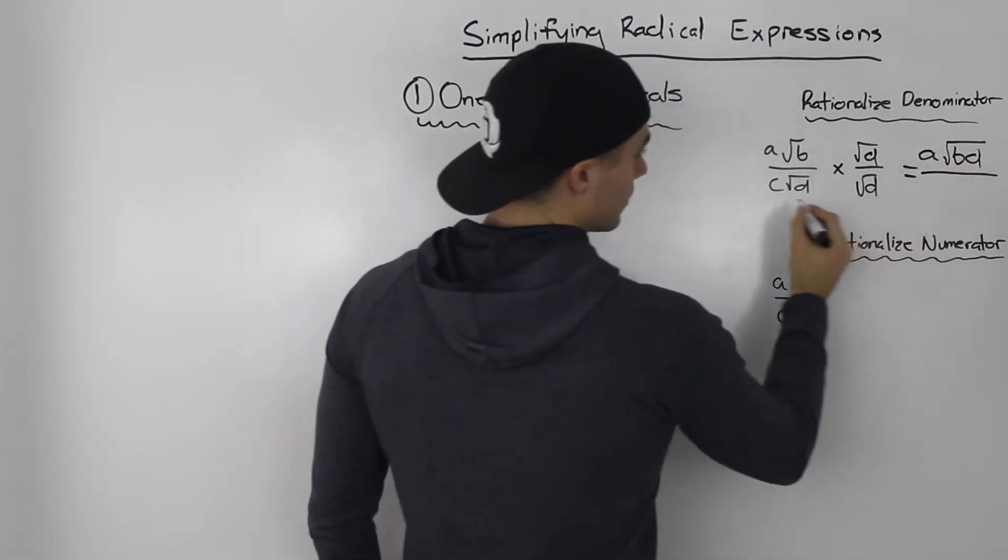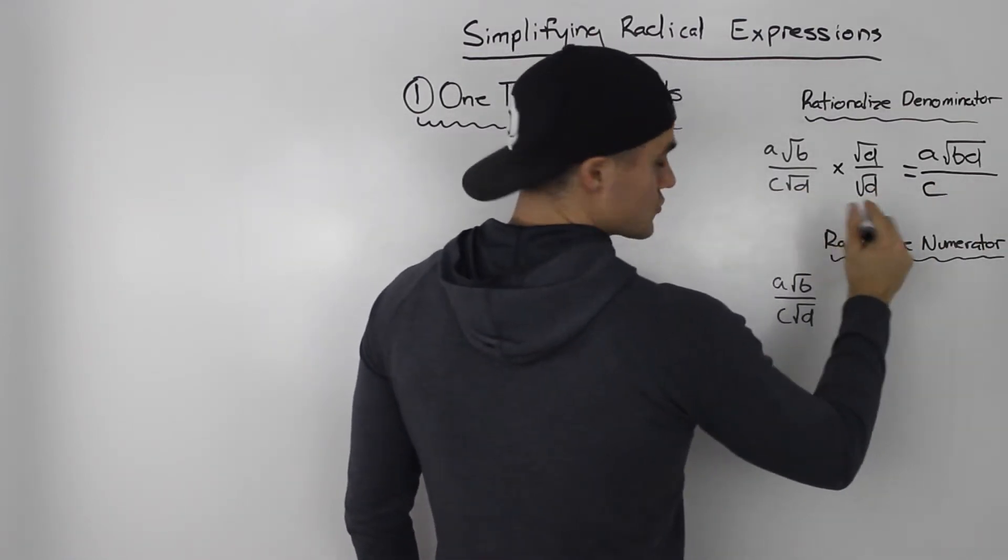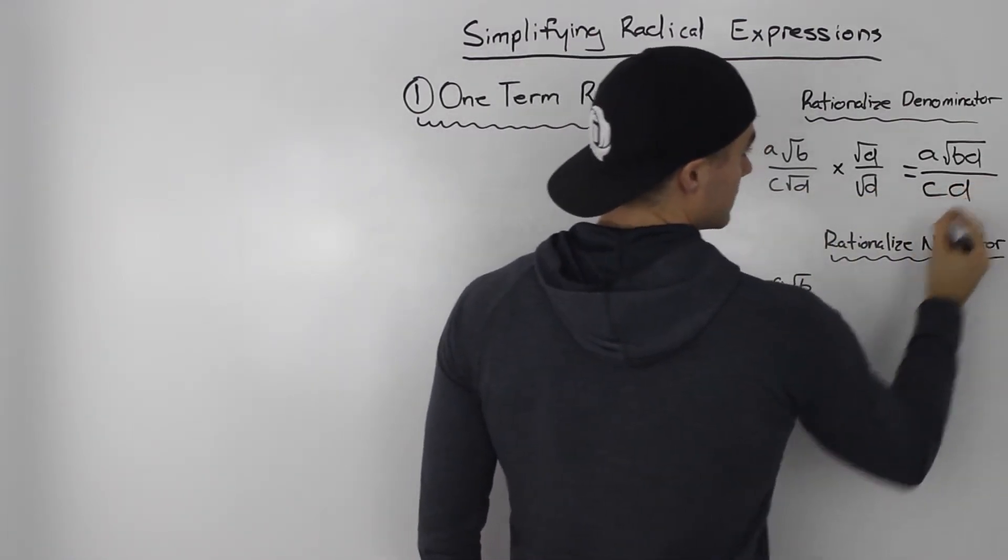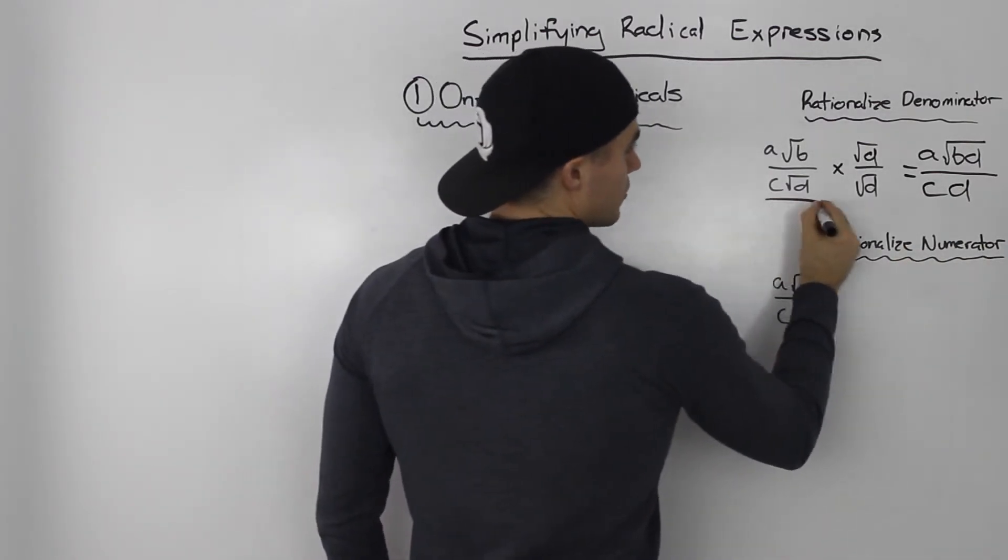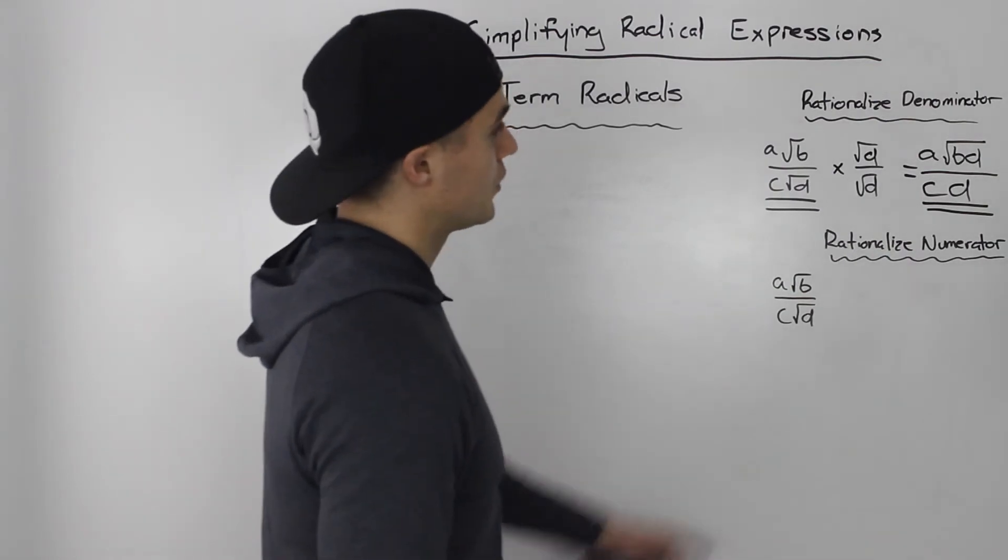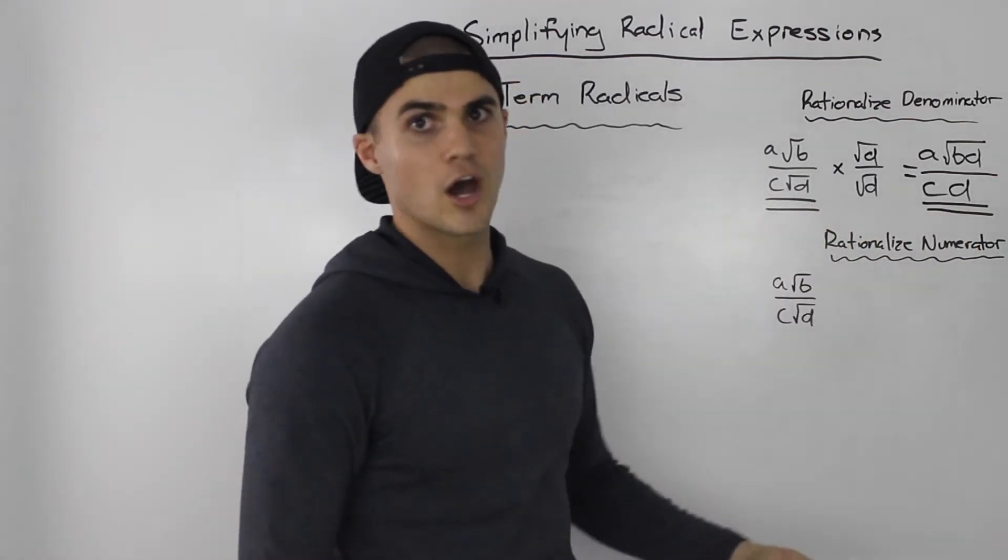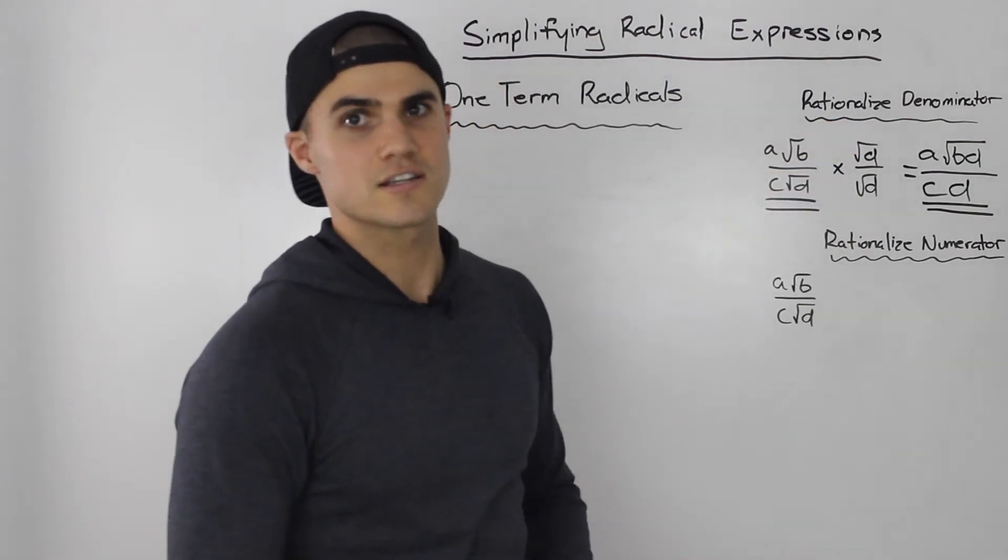In the denominator, we'll get C, and then root D times root D is just D by itself. These two expressions here are equal, but notice how this one has no radical in the denominator because we had to rationalize it.